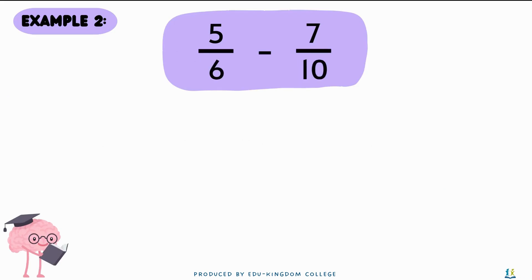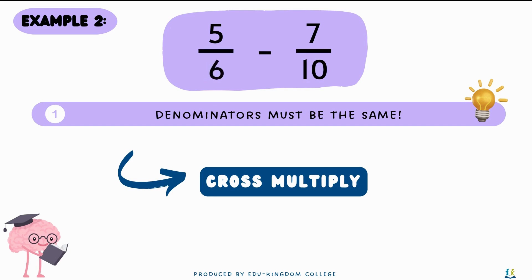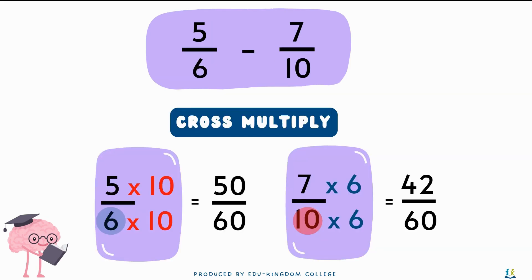With those three steps let's try another example: five over six minus seven over ten. The first step is to make the denominators the same using cross-multiplying. We get five times ten over six times ten, which gives us fifty over sixty, and seven times six over ten times six, which gives us forty-two over sixty.